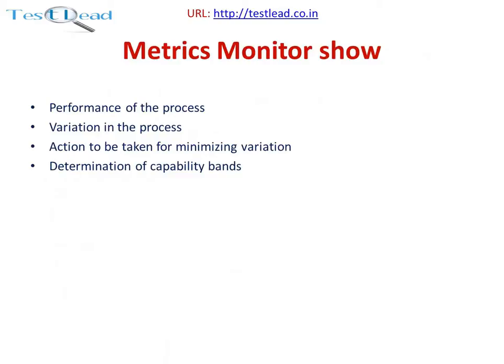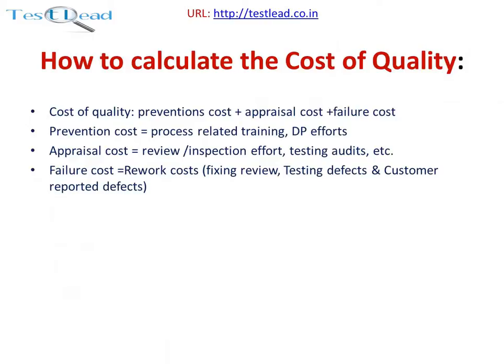How to calculate the cost of quality: cost of quality equals prevention cost plus appraisal cost plus failure cost. Prevention cost equals process-related training and development process efforts. Appraisal cost equals review, inspection, effort, testing, and audit. Failure cost includes fixing review defects, testing defects, and customer-reported defects. The cost of quality is the sum of prevention cost, appraisal cost, and failure cost.